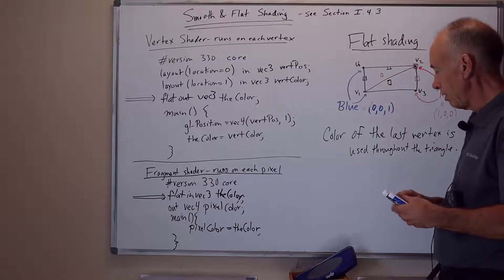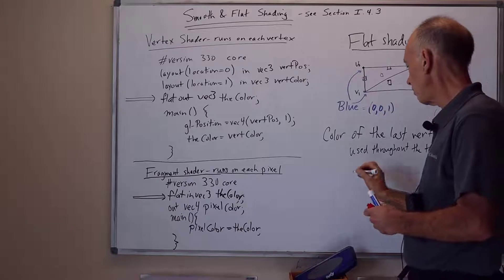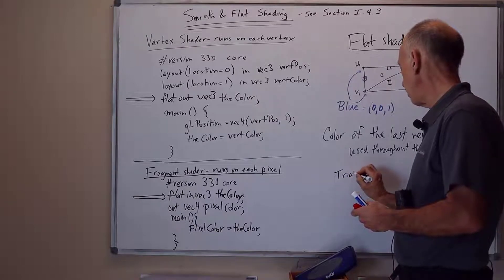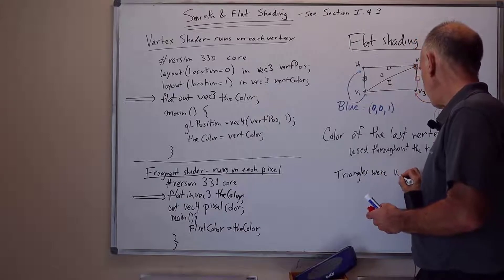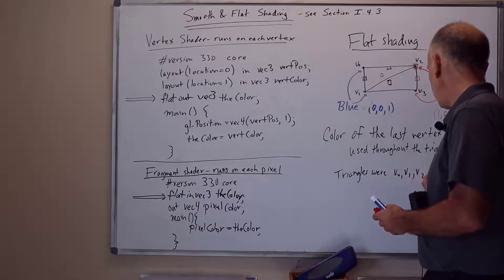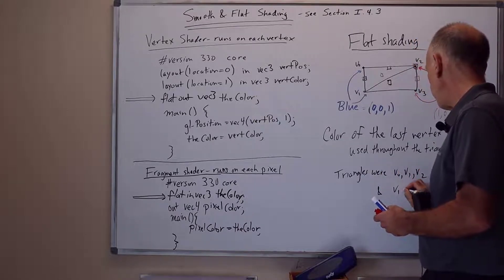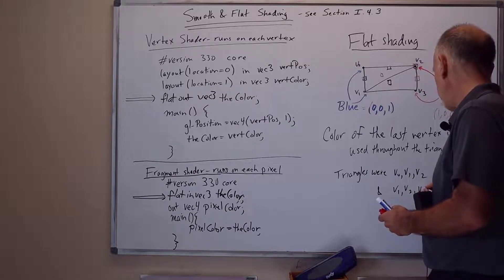In this particular example, the two triangles were, because it was in triangle strip mode, the triangles were v0, v1, v2, and then v1, v2, v3.